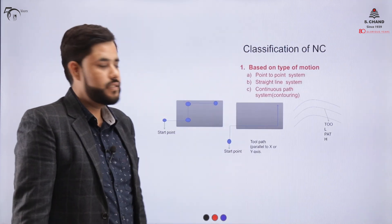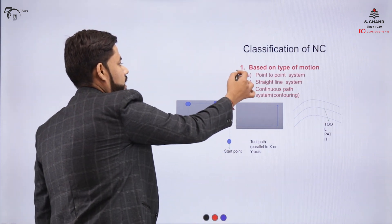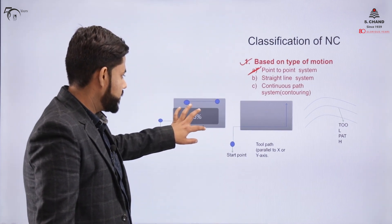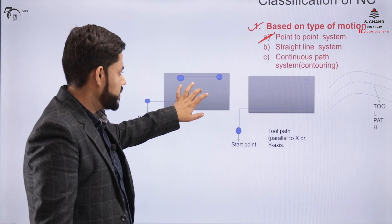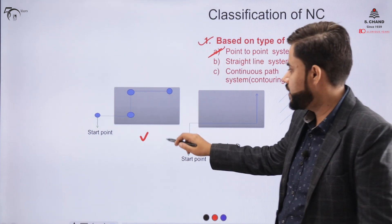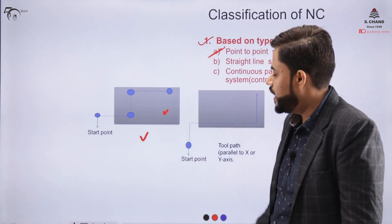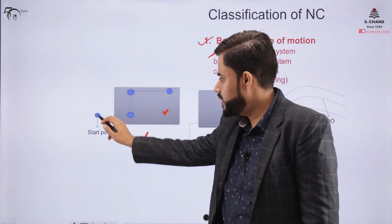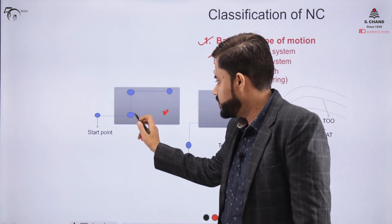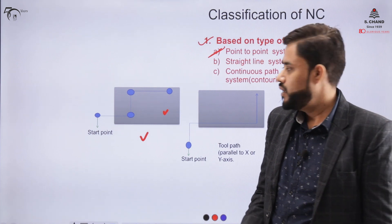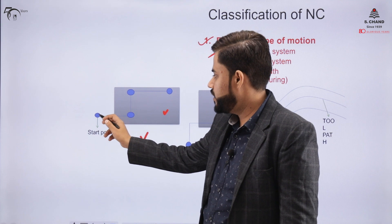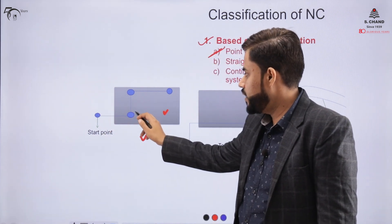Looking at these concepts one by one — the first is the point-to-point system. In this system, you have a workpiece and a starting point where the tool is located. If you are drilling holes on the surface, the tool follows the point-to-point system: it moves to the first point, performs the operation, then moves to the next point.